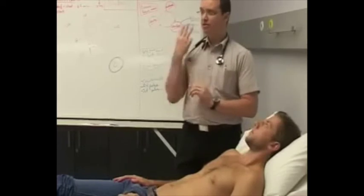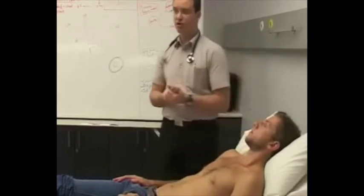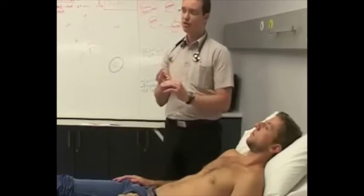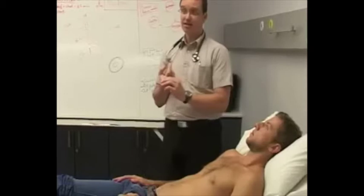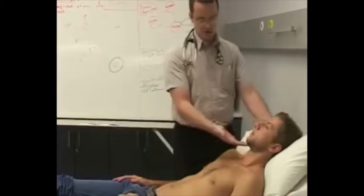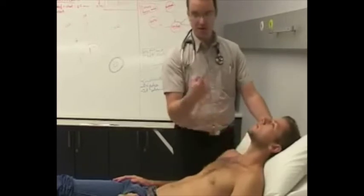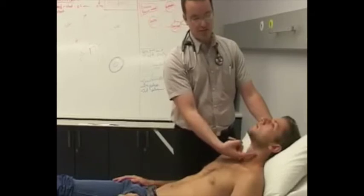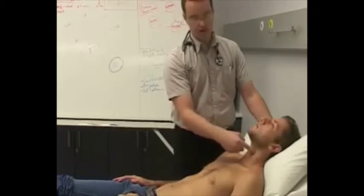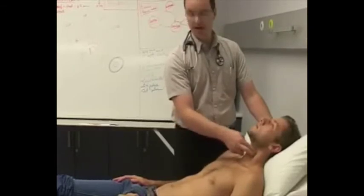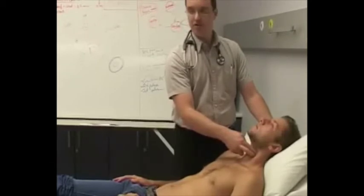Now we get to the neck. The three structures we want to investigate for cardiovascular diseases are the carotid arteries, the JVP, and the trachea. Starting with the carotids, I ask the patient to lift his chin up. The carotid arteries are located just lateral to the thyroid cartilage and medial to the sternocleidomastoid. Put your fingers next to the thyroid cartilage and go straight back and you'll be on the carotid artery.